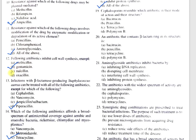Question number 19: Cephalosporins resemble which antibiotic in their mode of action and structure? A, bacitracin; B, penicillin; C, tetracycline; D, polymyxin B. The correct option is B, penicillin, because both penicillin and cephalosporins inhibit cell wall synthesis. Question number 20: An antibiotic that contains a beta-lactam ring in its structure is — A, bacitracin; B, penicillin; C, tetracycline; D, polymyxin B. The correct option is B, penicillin.